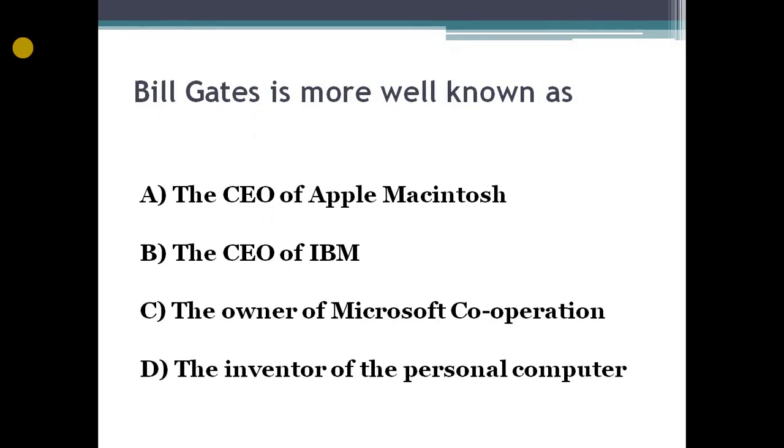Bill Gates is more well known as: Option A, the CEO of Apple. Option B, IBM. Option C, the owner of Microsoft Corporation. Option D, the inventor of the personal computer. So what's the right answer? Bill Gates is more well known as the owner of Microsoft Corporation.